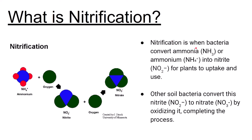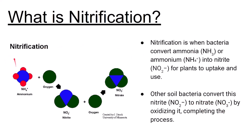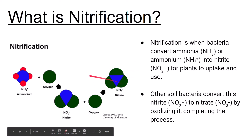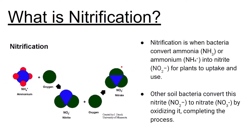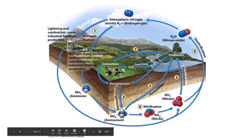Nitrification is when bacteria convert ammonia (NH3) or ammonium (NH4+) into nitrite (NO2-) for plants to uptake. Other soil bacteria then oxidize this nitrite into nitrate (NO3-), finishing the process. So you go from ammonium, oxidized by bacteria to nitrite, then oxidized again by another bacteria to nitrate. In the diagram you can see this progression: ammonium → nitrite → nitrate through these bacterial processes.